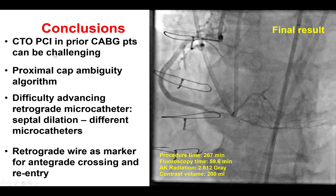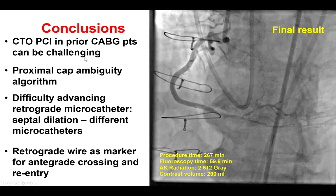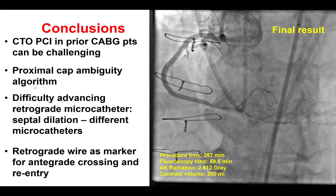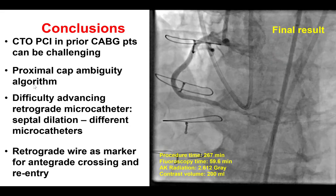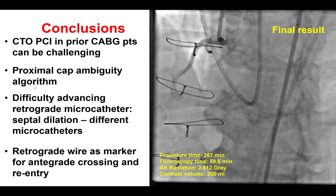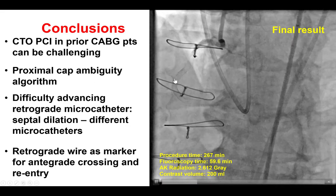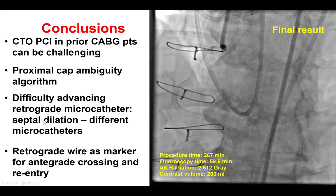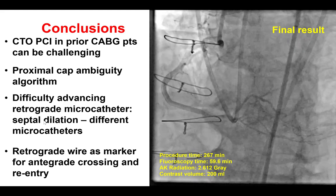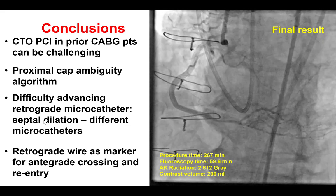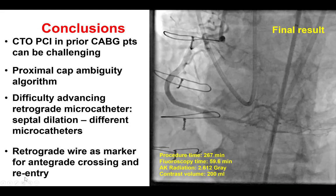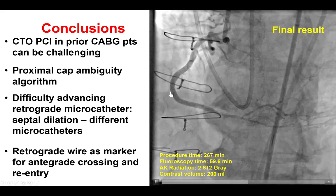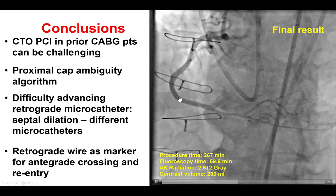Several things were learned from this case. First, the potential challenges of CTO-PCI in previous CABG patients. Second, how to approach proximal cap ambiguity — different angiographic projections didn't work; the retrograde approach helped clarify the distal vessel location, but retrograde equipment could not be advanced, leading us back to antegrade dissection re-entry. Third, what to do when the retrograde guidewire crosses the collateral but the microcatheter does not — try different microcatheters, increase support, and potentially balloon only septal collaterals. Finally, the retrograde guidewire was used as a marker of the distal true lumen to guide antegrade dissection re-entry.